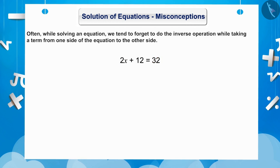Here, 12 is getting added in LHS. To solve this, we will transpose 12 in RHS. While transposing, often 12 is added in RHS as well, which is incorrect.